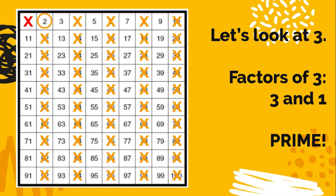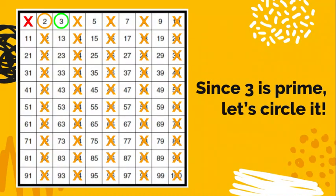When you have crossed off all the multiples of 2, let's look at 3. Factors of 3. Just 3 and 1. That's it. So that makes 3 another prime number. I'm going to pick a new color. I chose green and circle 3 since it's prime.